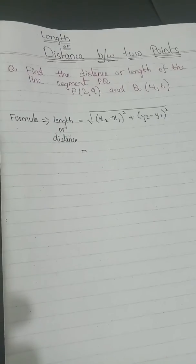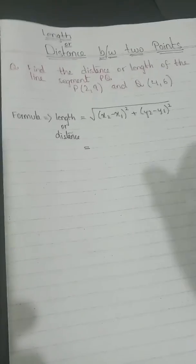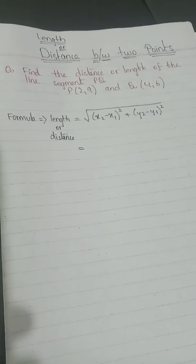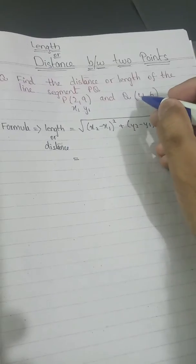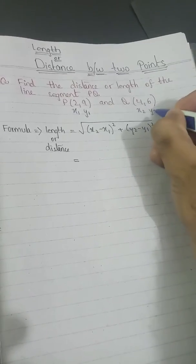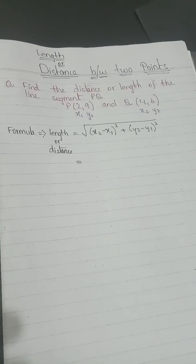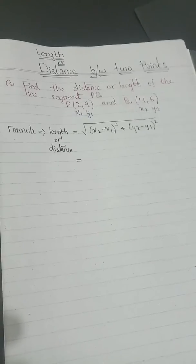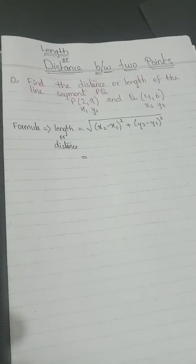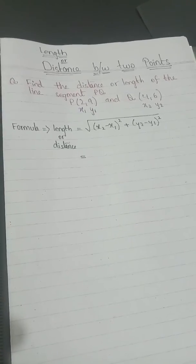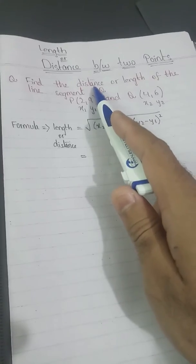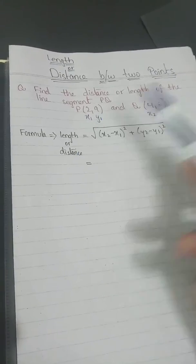After the midpoint, we have length or distance between two points. The question is to find the distance or length of line segment PQ. Point P is (2, 9), so I will label it as x1 and y1, and point Q is my second point, labeled as x2 and y2. Distance and length are basically the same thing — distance is between two points, and when we join those two points a line is formed. Don't get confused if the question asks about distance or length, because both are the same.